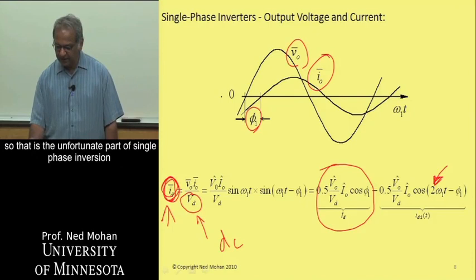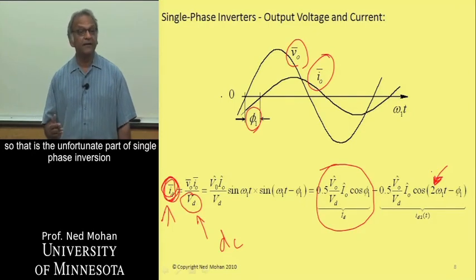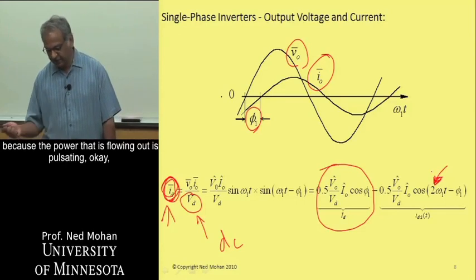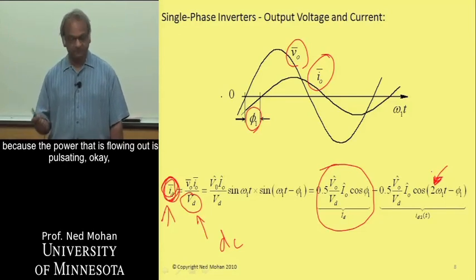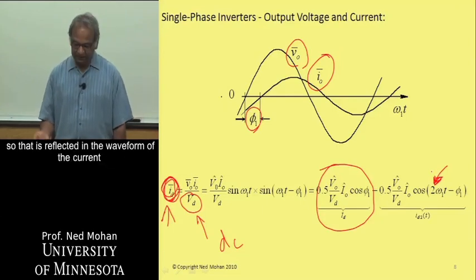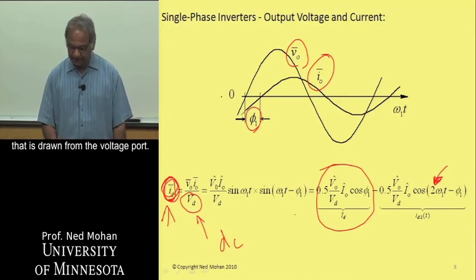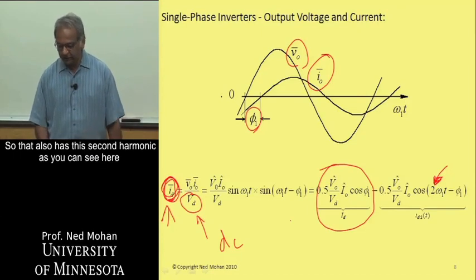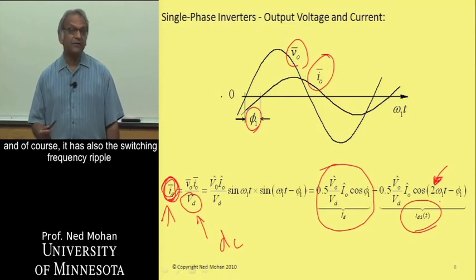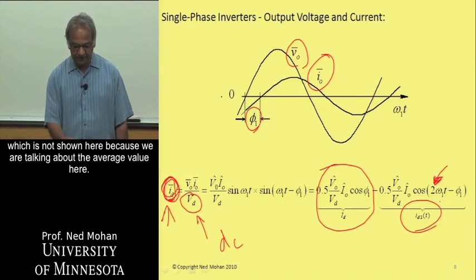So that is the unfortunate part of single-phase inversion because the power that is flowing out is pulsating as a function of time at twice the fundamental frequency. So that is reflected in the waveform of the current that is drawn from the voltage port. So that also has this second harmonic, as you can see here. And it has also the switching frequency ripple, which is not shown here because we are talking about the average value here.